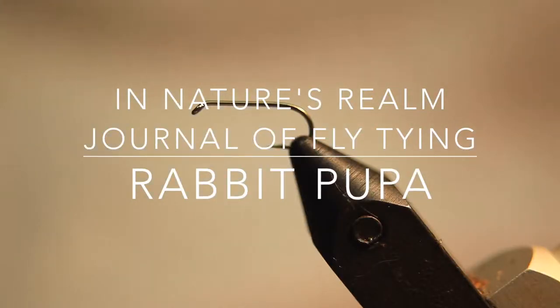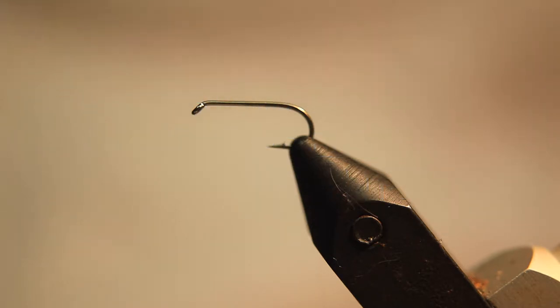The first fly that we're going to tie is the rabbit pupa, and the rabbit pupa is the imitation that imitates the larval stage of the midge. Not only is it a great trout catcher, it's a fantastic and simple fly to tie, only two materials needed. So let's start tying the rabbit pupa.